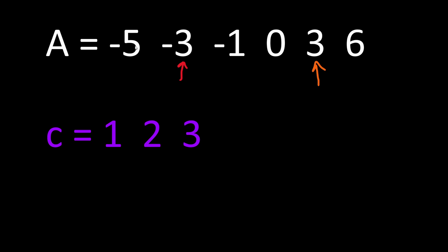So we have minus 3, and then we compare the absolute values again. But before that, we increment our counter of distinct elements once more — so far we have 3 distinct elements: 5, 3, and 6. Then we compare the absolute value of minus 3, which is 3, with the number 3.